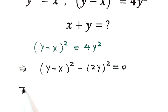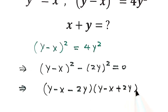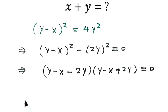Let's factor the left-hand side. Then (y minus x minus 2y) times (y minus x plus 2y) equals 0. Let's simplify. So this part is negative x minus y. Take out the negative sign, that's negative (x plus y).